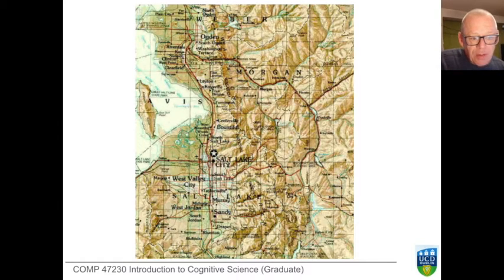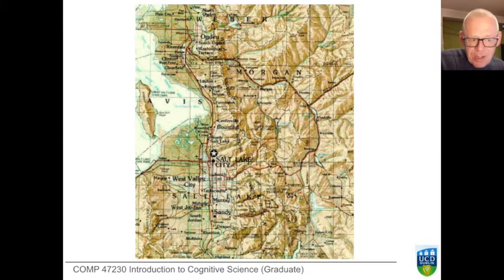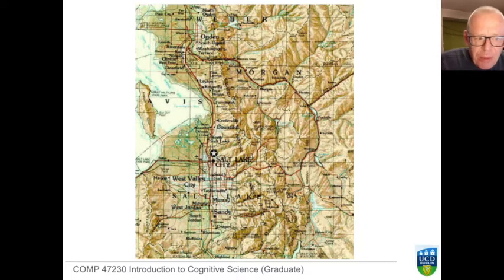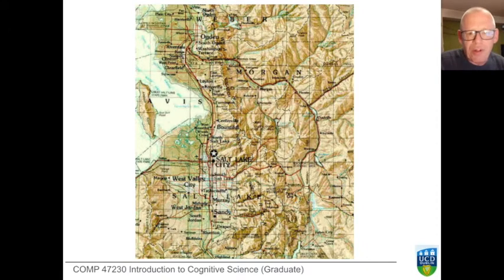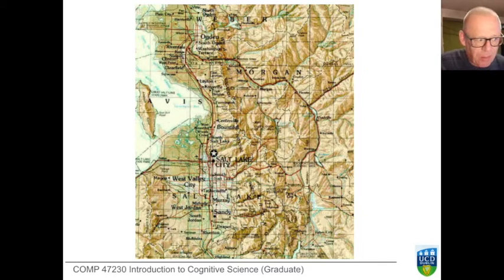Consider this, which is also a map of the area around Salt Lake City. Notice what's happened to Salt Lake City itself — it has been reduced to a five-pointed star. Now that's a bit odd, but it's even a bit odd to point it out, because as competent map users you have no difficulty dealing with a map like this, and you know that there'll be a certain degree of convention in the symbols that are applied.